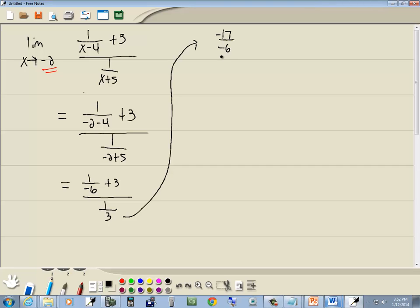1 over negative 6, I should say, over 1 third. Again, what I did is I took the 3, the number to the side, multiply it times the negative 6 gives you negative 18 plus 1 gives you negative 17. Your denominator stays the same. But since they're both negative, I can drop that. So that's 17 over 6 over 1 third.